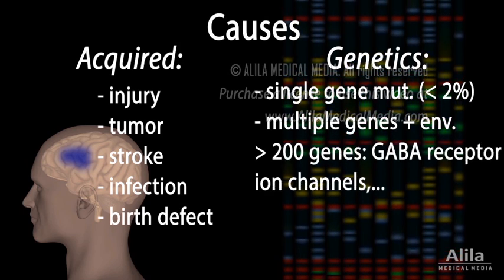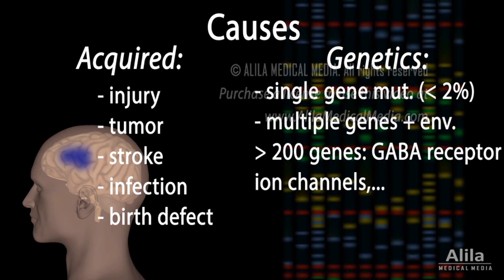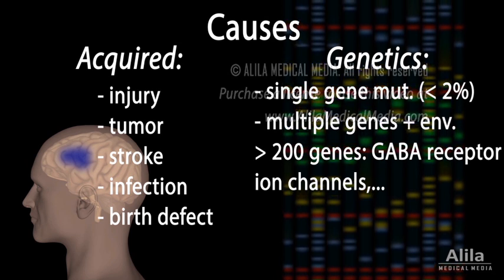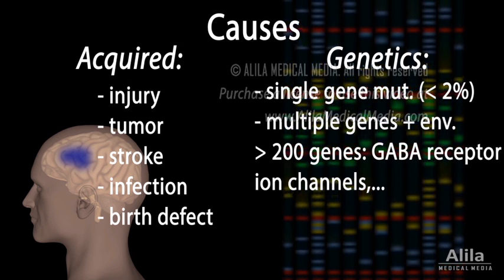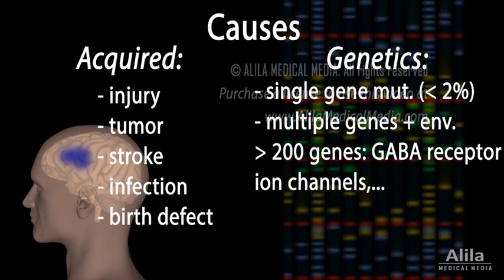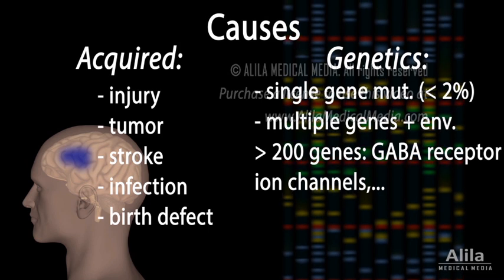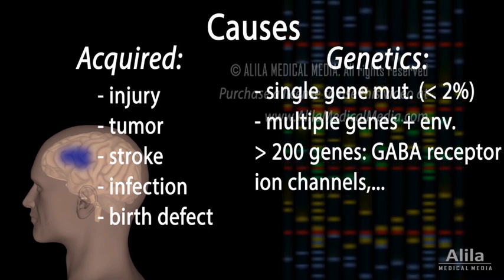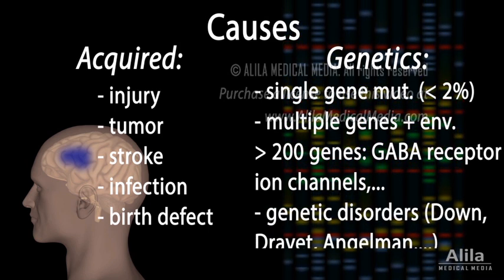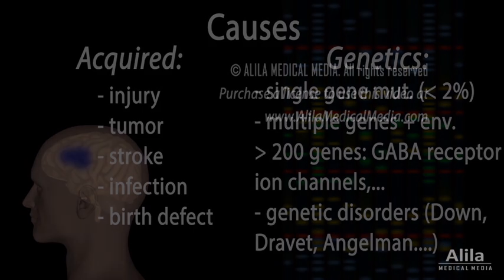Hundreds of genes have been implicated. Examples include genes encoding for GABA receptors, major components of the inhibitory circuit, and ion channels. Many genetic disorders that cause brain abnormalities or metabolic conditions have epilepsy as a primary symptom. The cause of epilepsy is unknown in about half of cases.